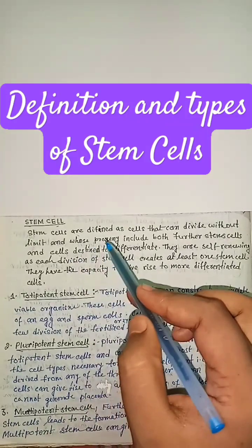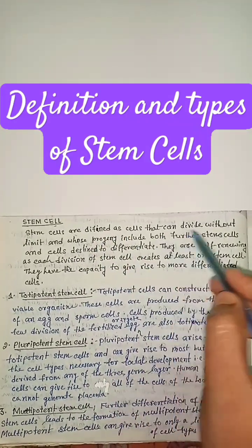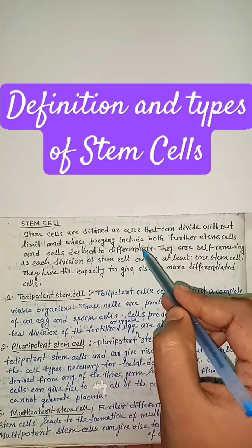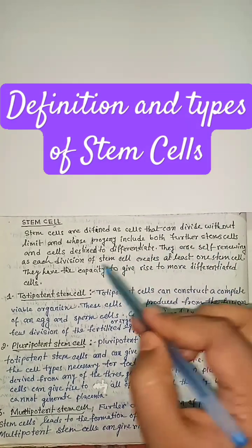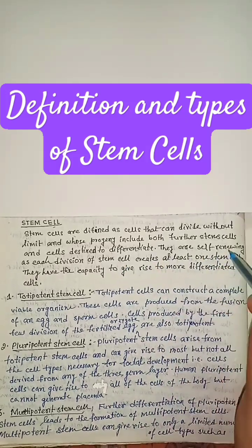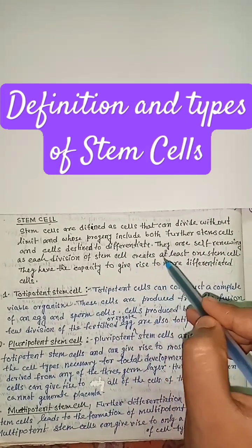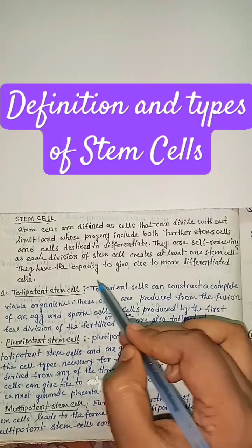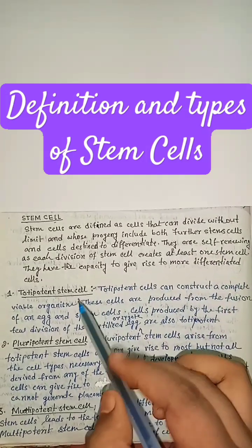Definition of stem cell. Stem cells are defined as cells that can divide without limit and whose progeny include both further stem cells and cells destined to differentiate. They are self-renewing, as each division of a stem cell creates at least one stem cell. They have the capacity to give rise to more differentiated cells.